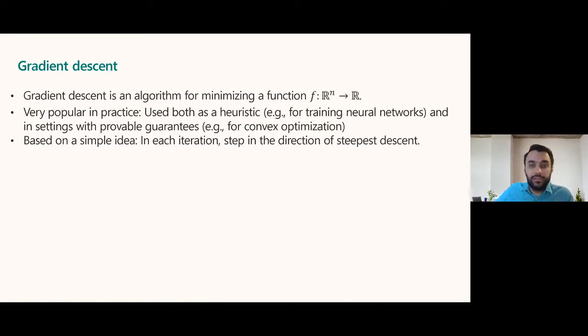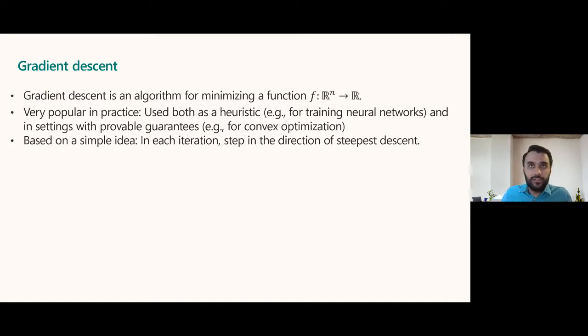There are many scenarios where gradient descent works optimally in the sense that it actually finds the right answer and you can prove this. One very rich setting is convex optimization. The basic idea of gradient descent is simple: you're trying to minimize the function and you're at some point X. It's easiest to understand with an example — think of the function as the height, which is a function of two parameters like X and Y coordinates.